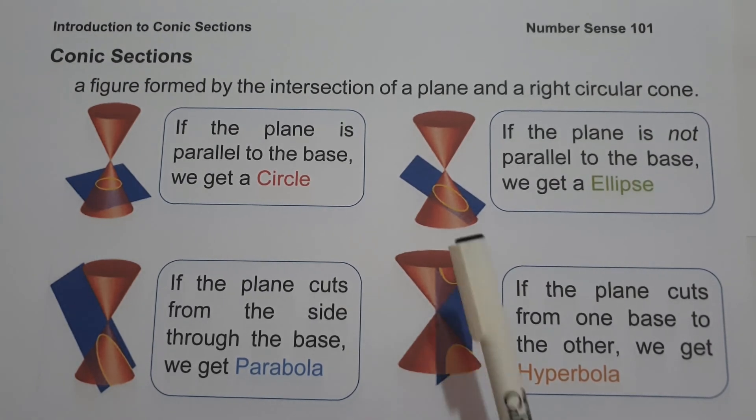Next, if the plane does the same thing but is not parallel to the base, we get an ellipse. An ellipse is the locus of all points in the plane, the sum of whose distances from two fixed points is a constant.